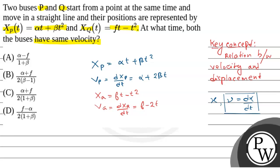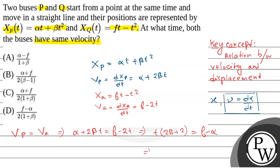The question asks at what time both buses will have the same velocity. So, vP = vQ, that is α + 2βt = f - 2t. Rearranging, t(2β + 2) = f - α, which gives t = (f - α) / (2(β + 1)).